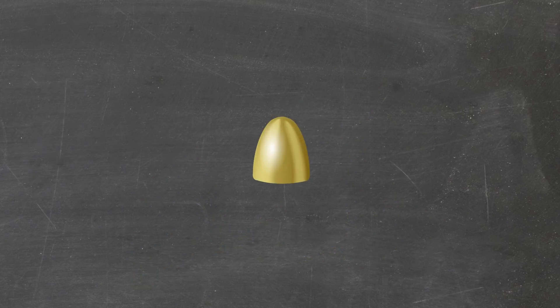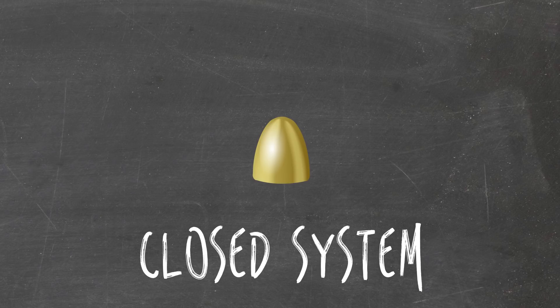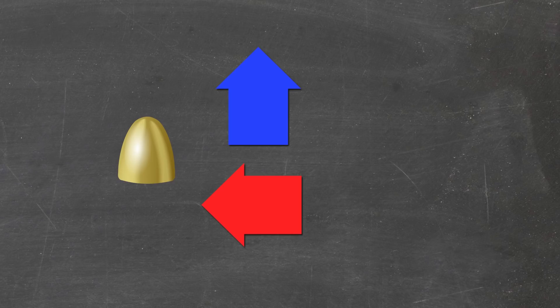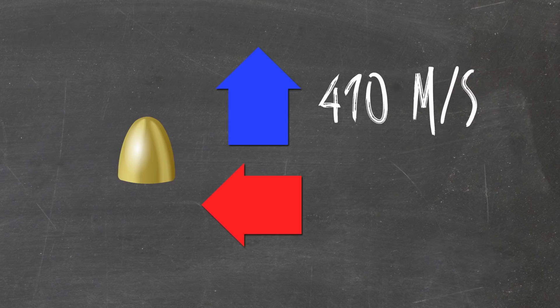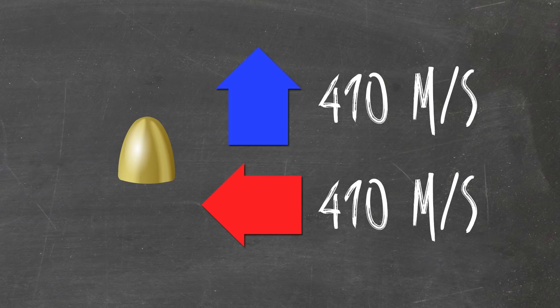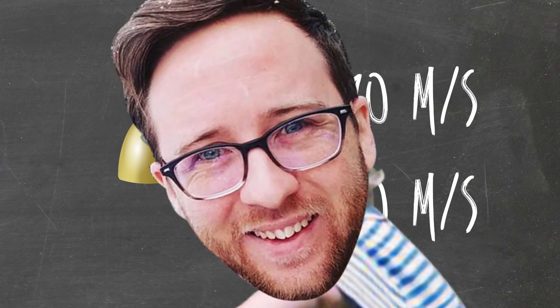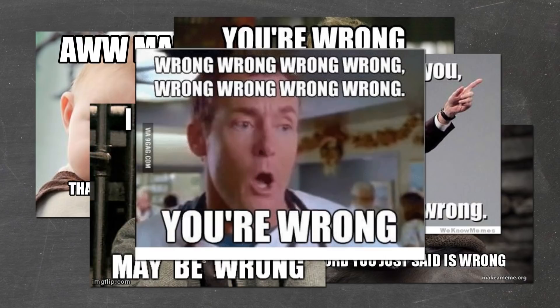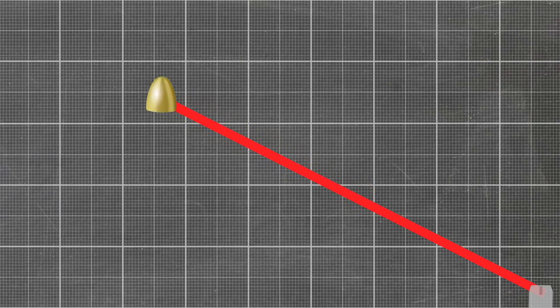The bullet exits the barrel — and at this moment, it's a free object in the air. This is a closed system, meaning you can no longer impart any force or energy into it. Once it is outside of the gun, that is it. Since you're apparently Superman, you did impart sideways movement into it equal to the forward movement. That means every second it's going to move 410 meters forward as usual, but it's also going to move 410 meters to the left. Looks like you curved it, right? Wrong! You did not curve it. All you managed to do, for all your strength, is make the bullet go in a straight line again.